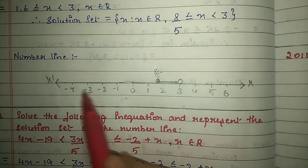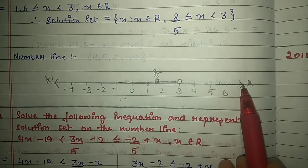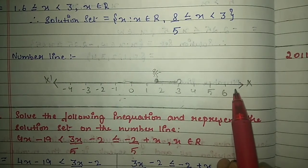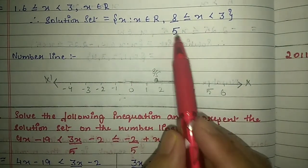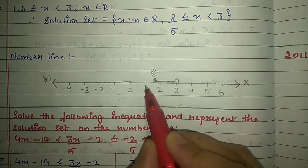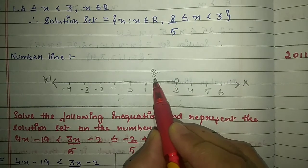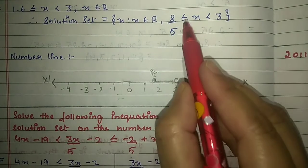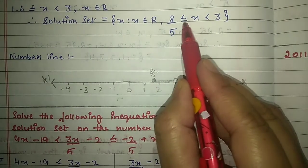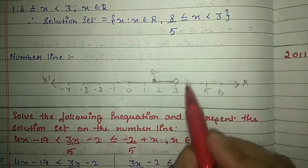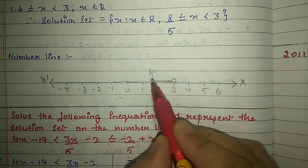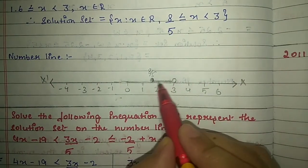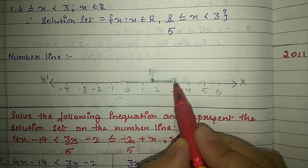Draw the number line with pencil and scale. Mark 8/5 (i.e., 1.6) — use a solid circle since the equal to symbol is present. Mark 3 — use a hollow circle. Join from 1.6 to 3.